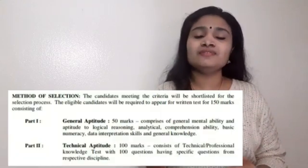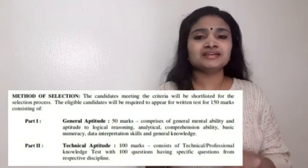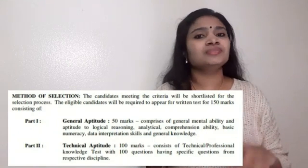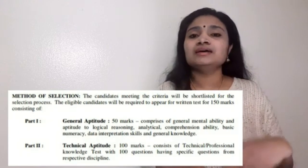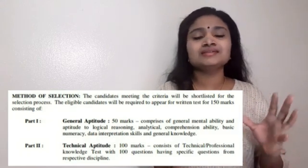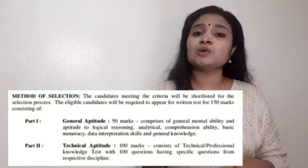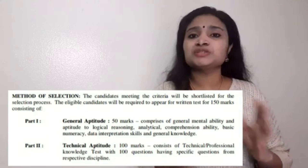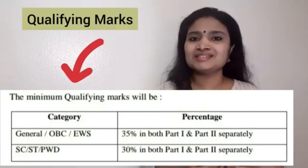There is a written examination in the selection process and it will be an objective type examination. There will be two sessions for this examination. Session one, or Part A, will consist of the generic area covering reasoning and aptitude. Part B will comprise your technical subject — whichever diploma branch you belong to, questions from that respective trade will be there. Let us see the mark division first, then we will see the syllabus.